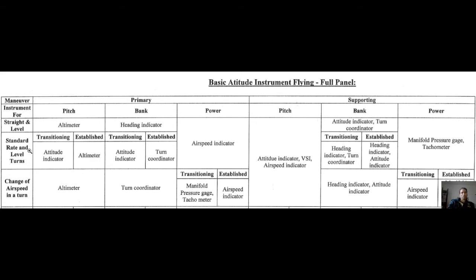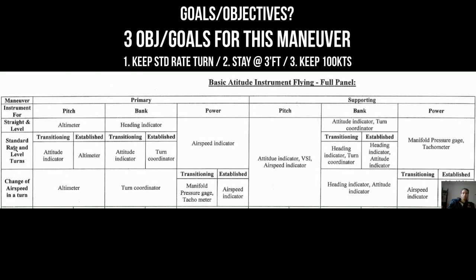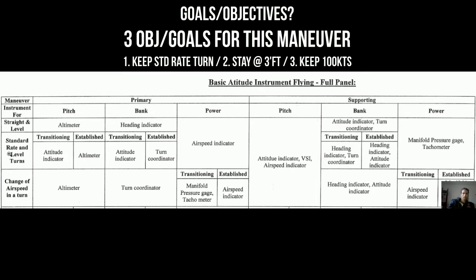Let's go to our second maneuver, which is a little more specific — standard rate level turns. So again, the question is, what is our main objective? What do we want to do in this maneuver? Our goal is to maintain a standard rate turn. IFR flying or instrument flying is always standard rate turns — three degrees per second. For bank information, our turn coordinator will give us the most direct indication of whether we have a coordinated and standard rate turn or not. So this will be our first instrument to look at in a standard rate turn, whatever direction we're going.